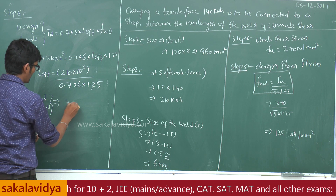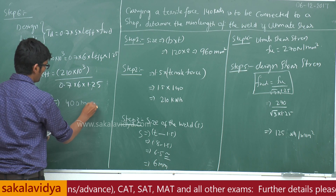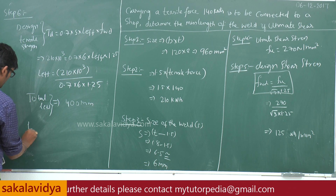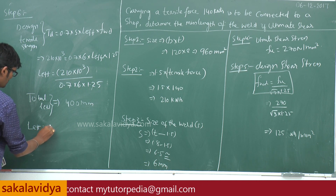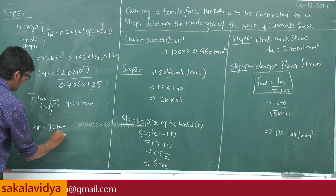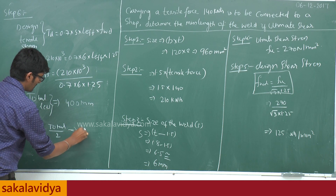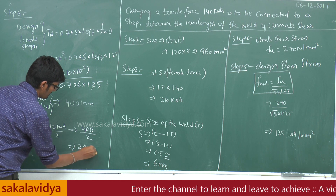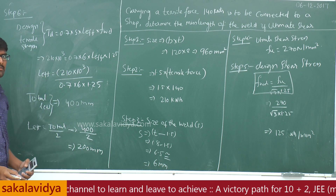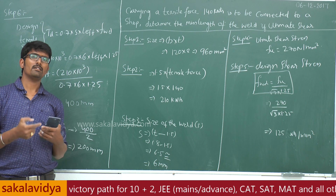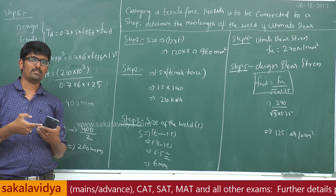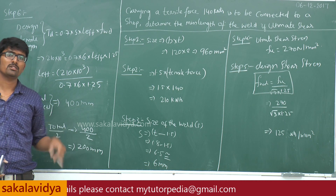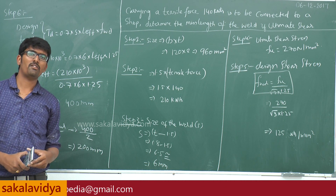We get a total effective length of 400 mm. Since there are two weld lengths, the single effective length is 400 divided by 2, which equals 200 mm. So the length of 200 mm on both sides is needed for welding the gusset plate and flat plate. Total effective length is 200 plus 200 equals 400 mm. This is a very important question for your examination.